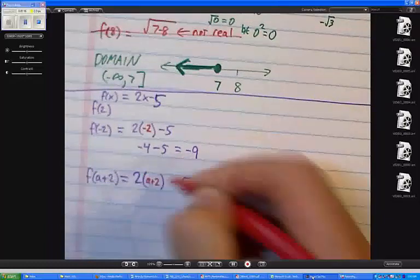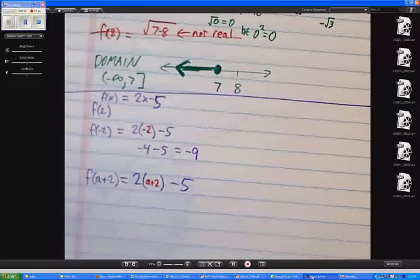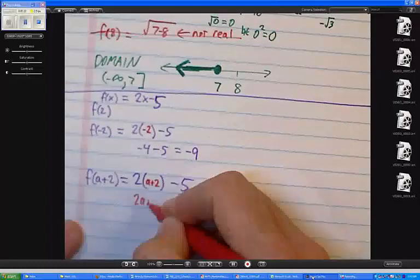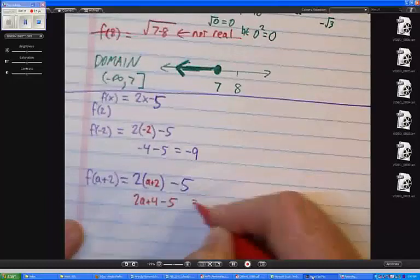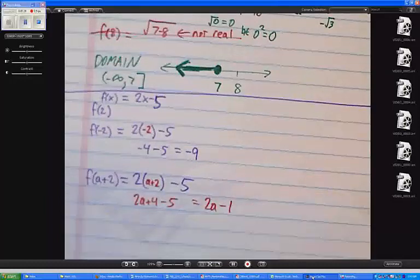And then, just like I did in this problem, I want to simplify. So I get 2a plus 4 minus 5. I get 2a minus 1. So f of a plus 2 is the same as 2a minus 1.